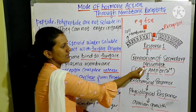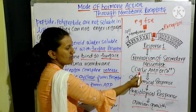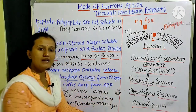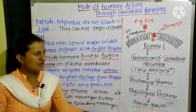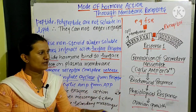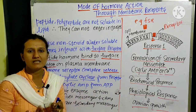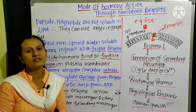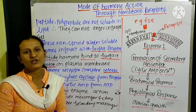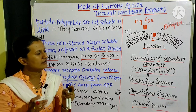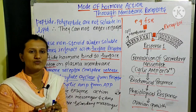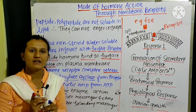The generation of secondary messengers occurs in the form of cyclic AMP (adenosine monophosphate), calcium ions, inositol triphosphate (IP3), or guanosine monophosphate (GMP). These are the various secondary messengers produced as a result of this cascade.